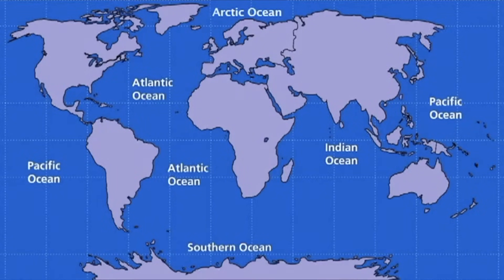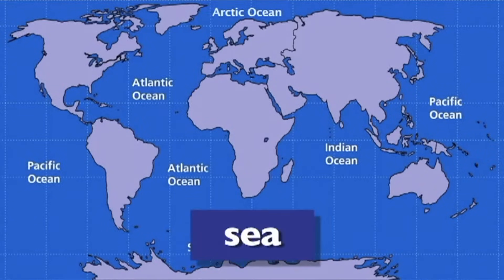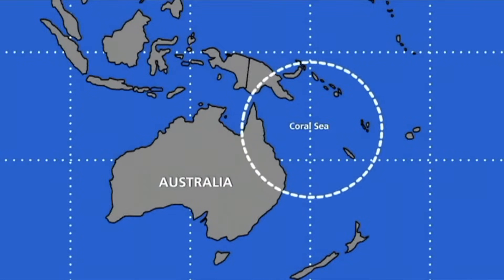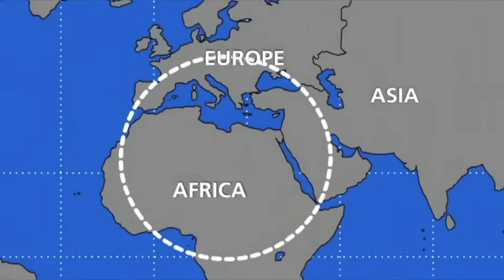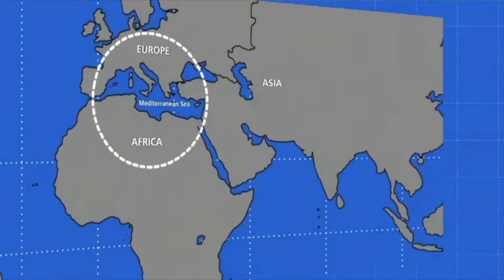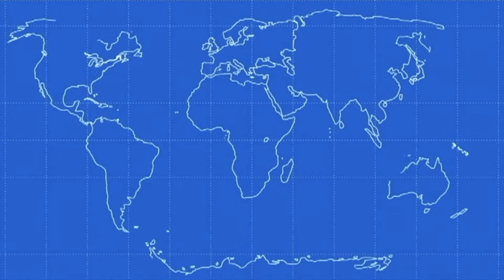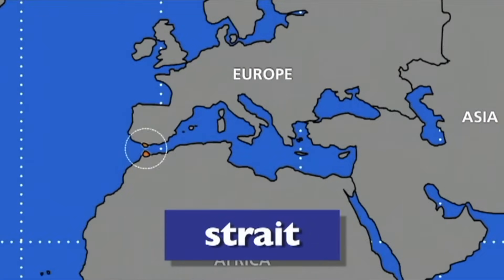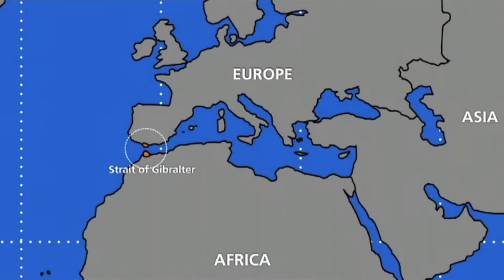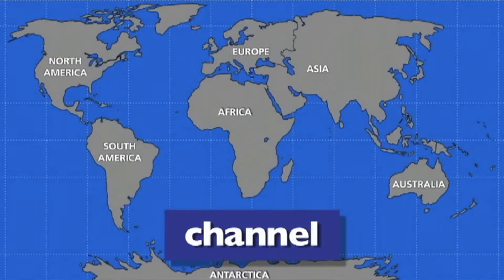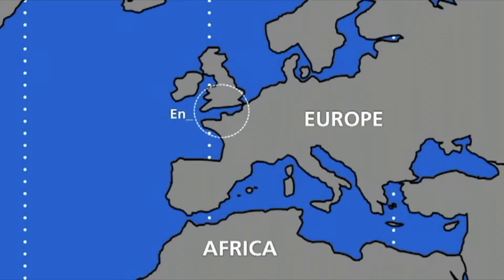Geographers then divided the oceans into smaller bodies of water called seas. The Coral Sea, located just off the eastern coast of Australia, is really part of the Pacific Ocean. The Mediterranean Sea is a large body of salt water that's partially enclosed by land. Some waterways connect two larger bodies of water. If the passageway is narrow, it's called a strait — the Strait of Gibraltar connects the Mediterranean Sea and the Atlantic Ocean. If the passageway is wide, it's called a channel — the English Channel links the Atlantic Ocean and the North Sea.